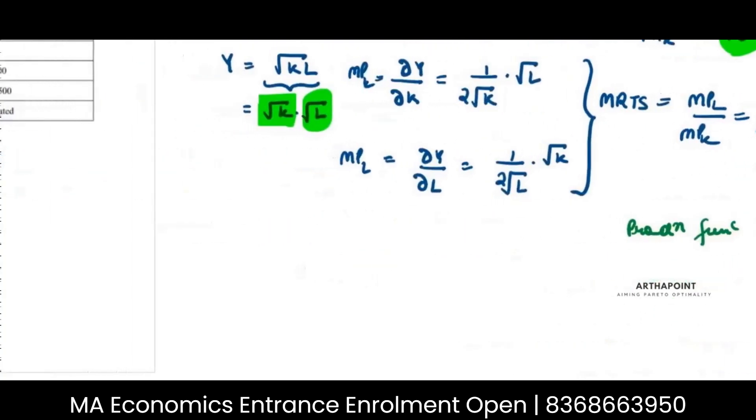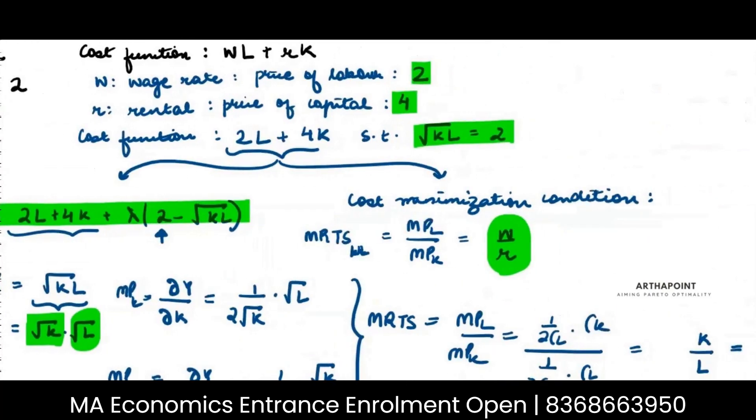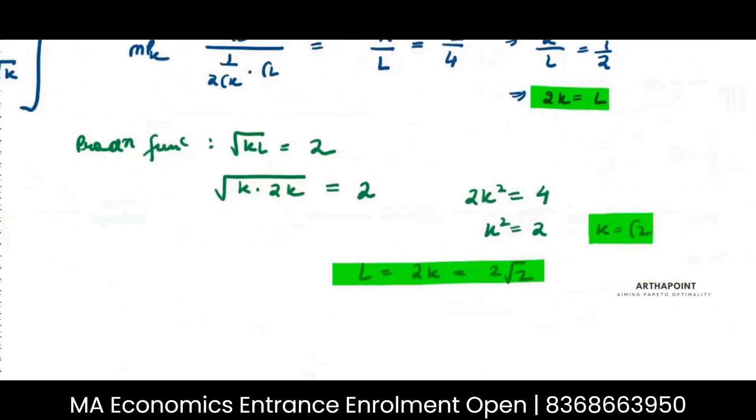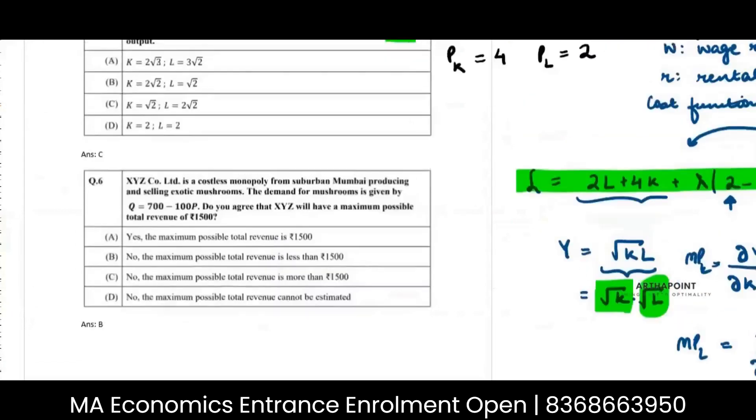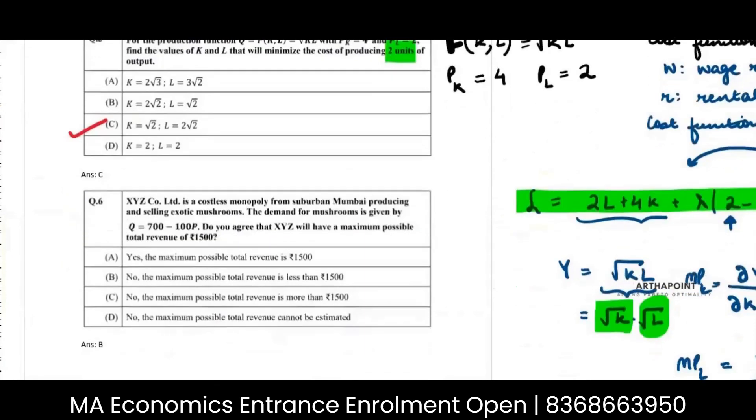You would have got exactly the same thing if you would have done this through Lagrange. Lagrange is doing the two things together simultaneously. When you minimize the Lagrange you are optimizing also and you're taking care of this condition also. If you don't want to follow that, follow this cost minimization condition MRTS is equal to W by R. Get a condition in place and put it back in the production function and get the value of K and L. These are very common questions, every year these questions will come, so you have to practice these. So it will be root 2 comma 2 root 2. Let's go to the next question. So this is going to be my answer C, root 2, 2 root 2.